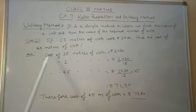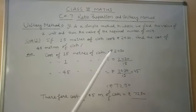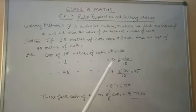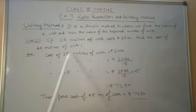So, first of all, the given value is cost of 15 meters of cloth is 2430. Then we find the cost of 1 meter of cloth, that is 2430 divided by 15.